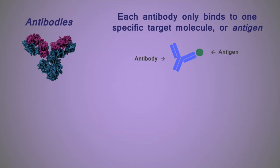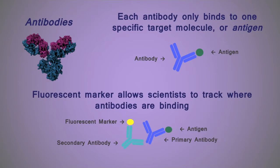Scientists can use this binding behavior to their advantage by attaching a fluorescent marker to an antibody so that the location of this antibody will be visible once the fluorescent marker is activated and visualized under the appropriate microscope.